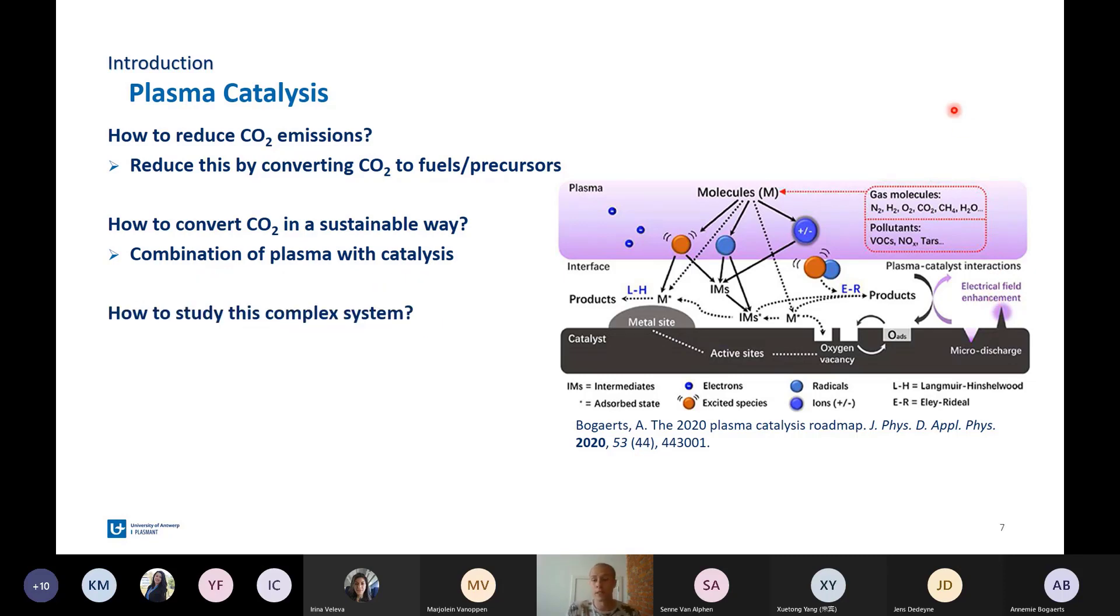How we're going to study this complex system is not easy because there's a lot going on, but the solution to this is to use computer modeling, because computer modeling allows us to examine the interactions separately and not everything at once, as you do with experiments. Furthermore, computer modeling also allows detailed analysis of reaction pathways. But of course, in the end, you always have to validate computer models with experiments.